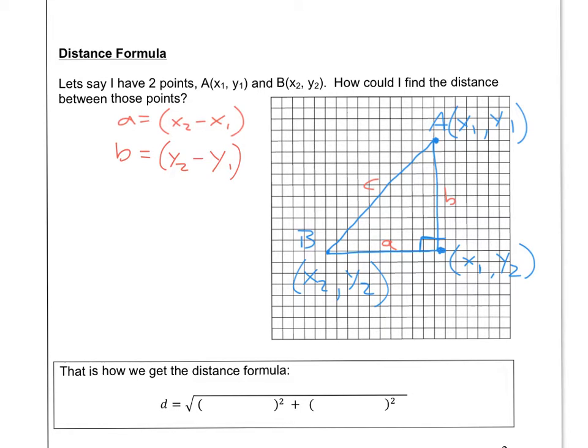Okay. Well, remember, Pythagorean theorem says that A squared plus B squared equals C squared. And C is this distance that we're trying to find, right? Well, we know what A is now. We have some expression for it in terms of coordinates.